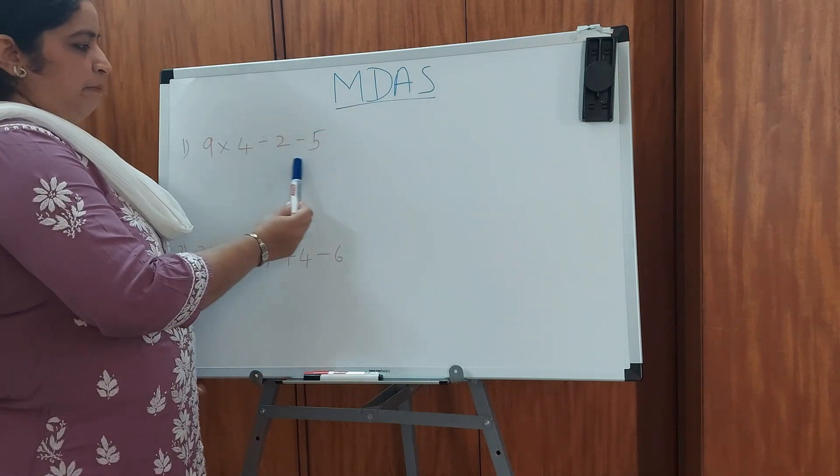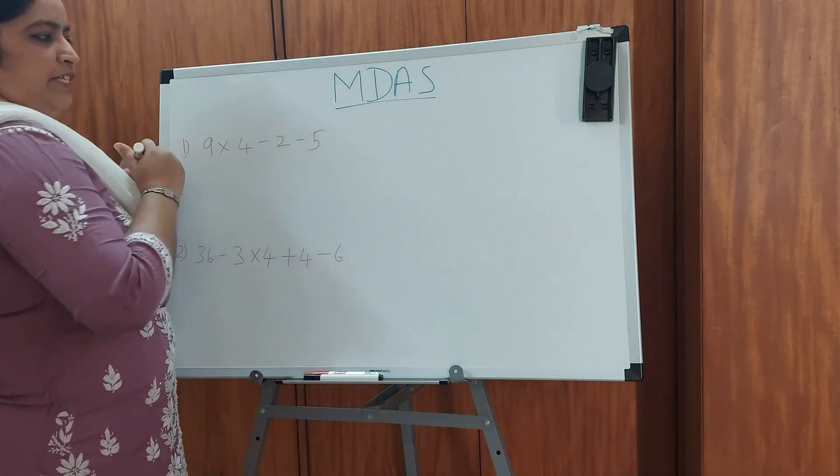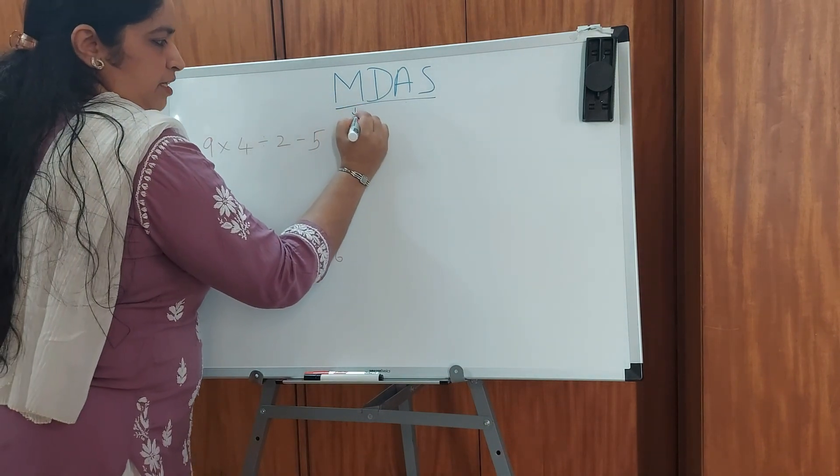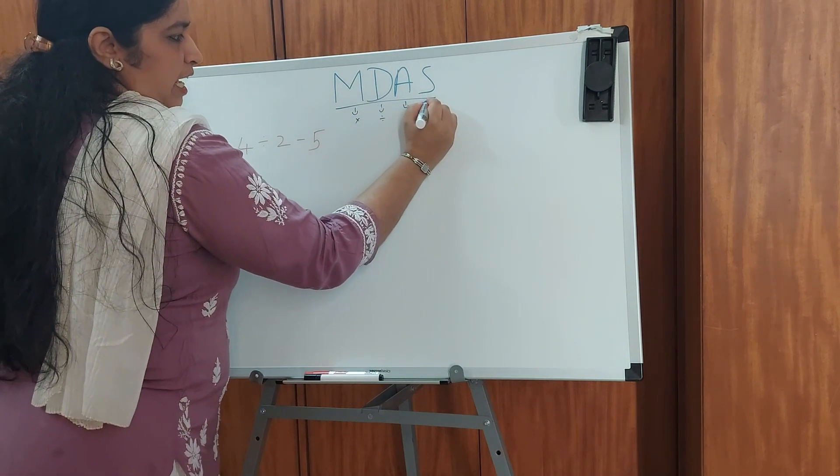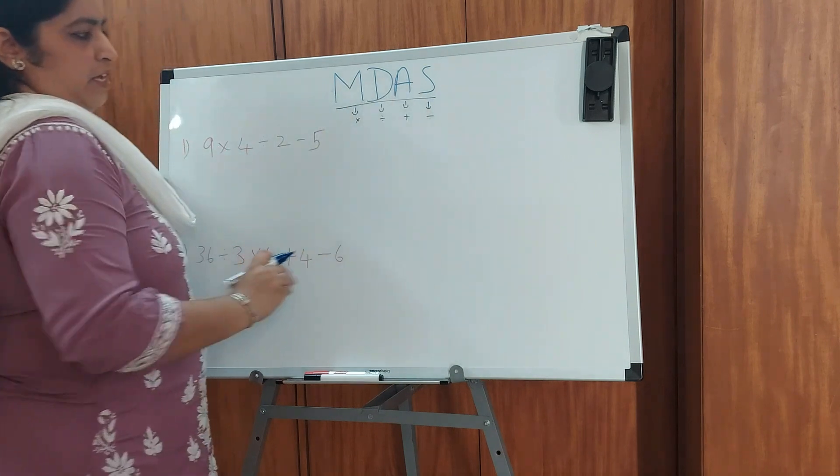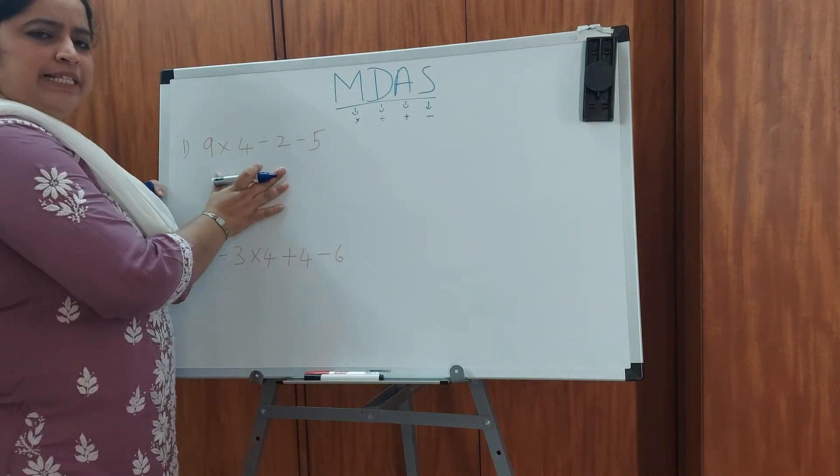This is used when all the operators come in the same question. So all the operators, that is M which stands for multiplication, D is for division, A is for addition, and S is for subtraction. So these are the 4 operators. Any 2 or any 3 operators would come in the same question.